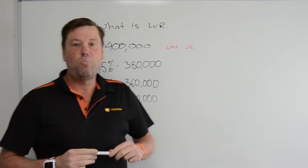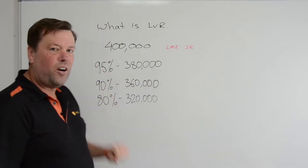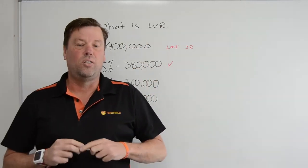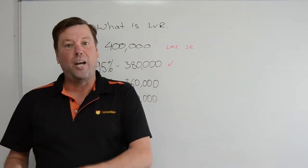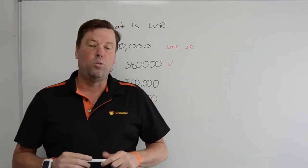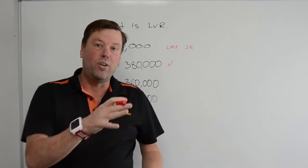So what is the impact? If we do a 95% lend, we need to have mortgage insurance on that loan. The bank goes to another institution called a mortgage insurer, generally Genworth or QBE, and they'll approve that loan because it's higher risk.